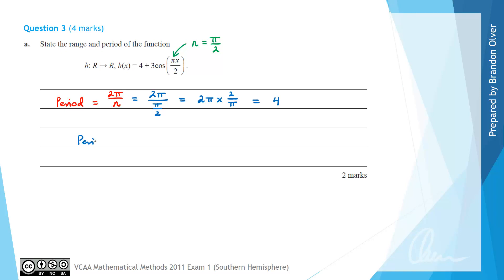So the period of the function h is equal to 4. The range is calculated from the middle of the function which is this translation of 4 up, and you're going to go the amplitude of 3 up from that and down from that. So the range is going to be 4 take 3 is 1 as the lowest y value and 4 plus 3 is 7 as the largest y value with square brackets. That is the period and the range that we were required to state.